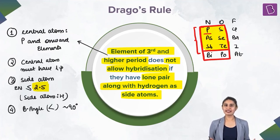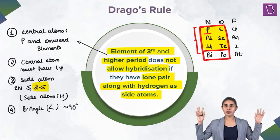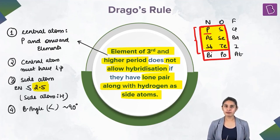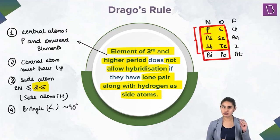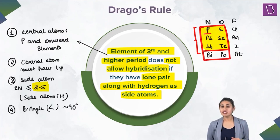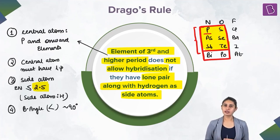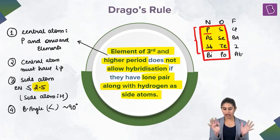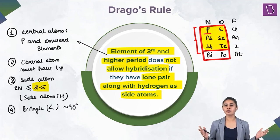Don't confuse SF6 — which has twelve 90° angles — as a Drago compound. Remember all three conditions must be met: central atom is phosphorus onward, side atom is hydrogen (or any atom with electronegativity ≤2.5), and there must be a lone pair on the central atom. The implication is a bond angle close to 90° and a percentage s character of 0%, because bonding occurs through p orbitals only, not the s orbital.